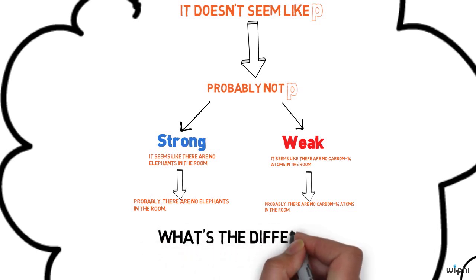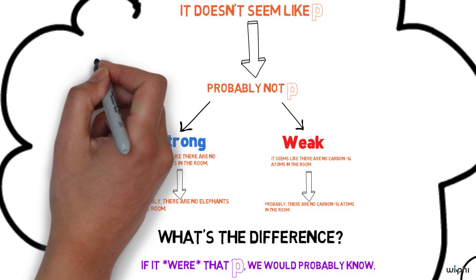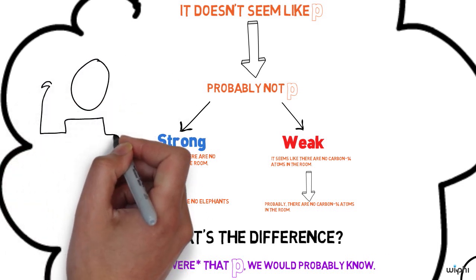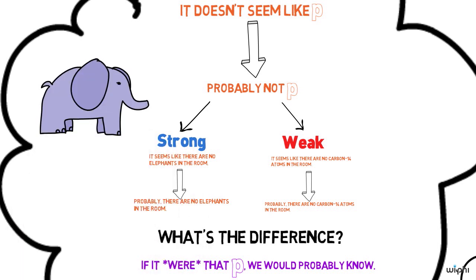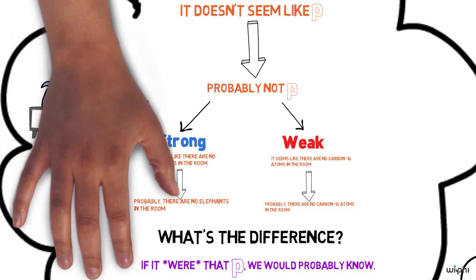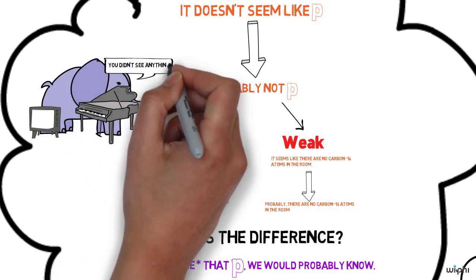The difference can be captured in the sentences of the form. If there were a blank, we would probably know it. So we'll take the first case. If there were a live elephant in the room, we would probably know it. That is true. You look around the room and a live elephant is something you're going to notice. If the room is small enough, there aren't a lot of large objects a live elephant could hide behind. So it's a very strong inference.